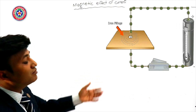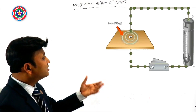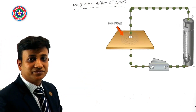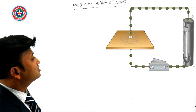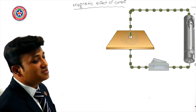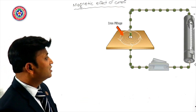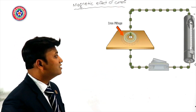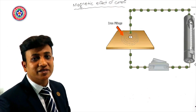This is because the electric current produces a magnetic field around the conductor, and iron filings, being magnetic in nature, align themselves in concentric circles. When we repeat the experiment by reversing the direction of flow of current, the iron filings arrange themselves in concentric circles again but in the opposite direction. This is because the direction of the magnetic field changes when the direction of current is reversed.